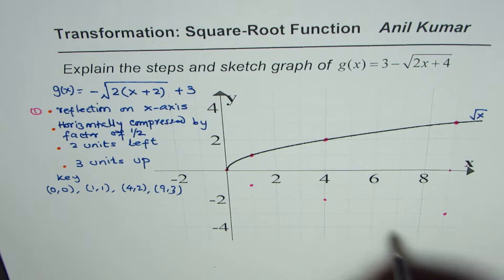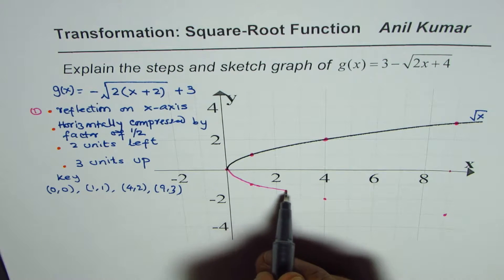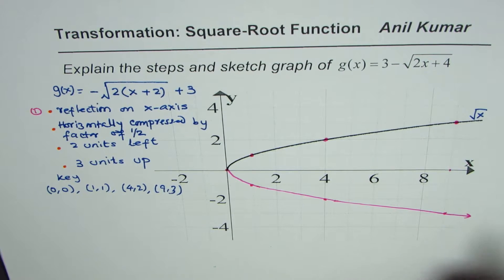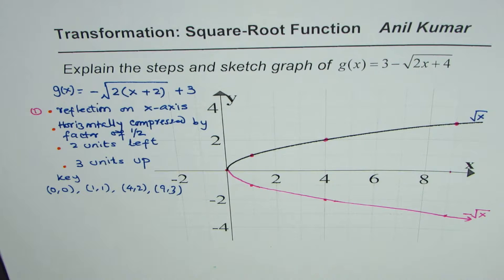Connecting these points we get our graph, which is minus square root of x. That is how you get the reflection.